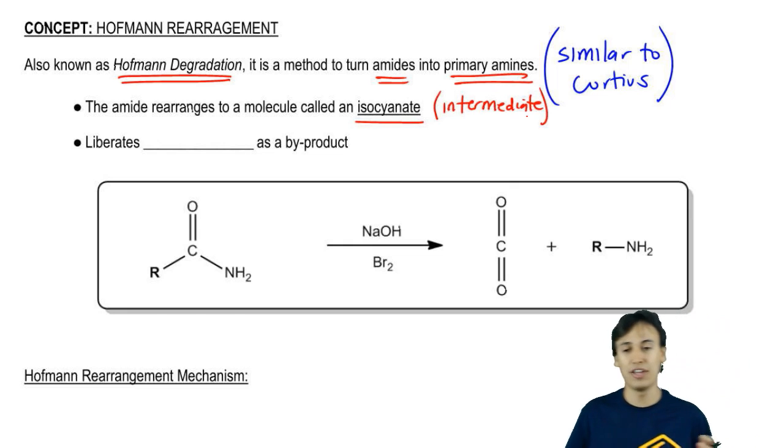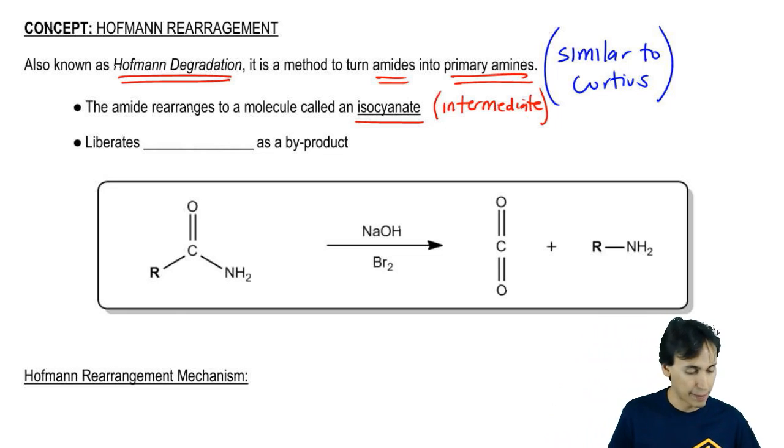Now I use the term intermediate here very cautiously because I don't like to say intermediate. It sounds like it's got a charge or it's a highly energized species. Isocyanate is pretty stable. I'm just saying it's an intermediary structure where we make the isocyanate first and then we add something to it.